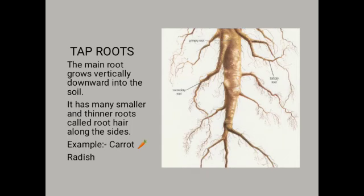Tap root: The main root grows vertically downward into the soil. Kethe joh main root hote hain, woh niche ki aur grow kerti hain — hum unko kya bolte hain? Tap root. It has smaller and thinner roots called root hairs along the side. Kethe iski chhote aur pathle roots hote hain jinhein root hairs bolte hain — ye sides pe hote hain. Example: carrot and radish.